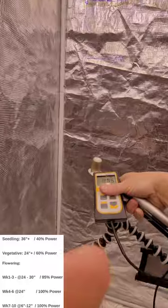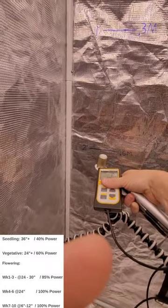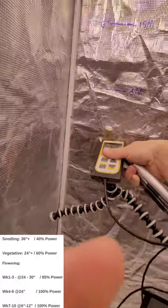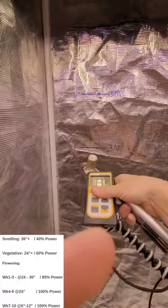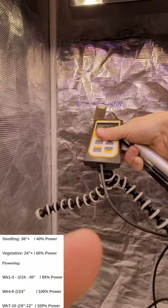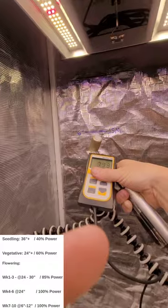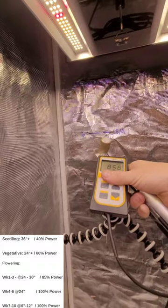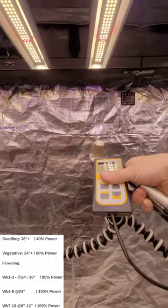And then back over here, that's that 2-foot mark. Then, so that's weeks 4 through 6, weeks 7 through 10, the light's going to be as close as 12 inches. You can even get as close as 6 inches. This is 6 inches at 100% there. As you can see, 6 inches.